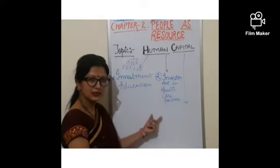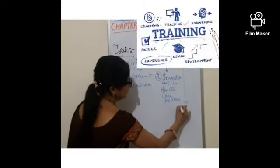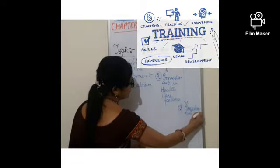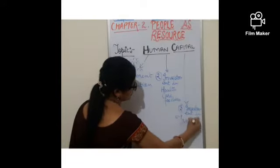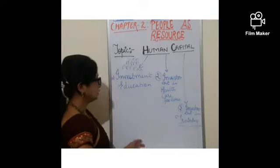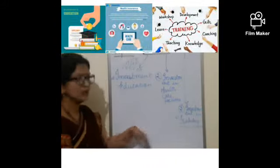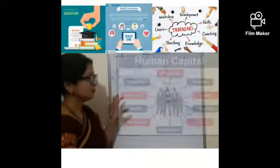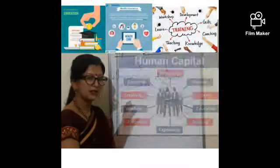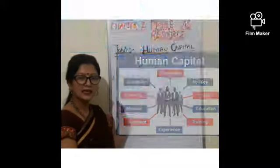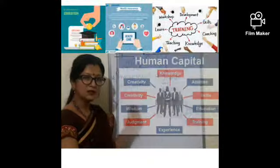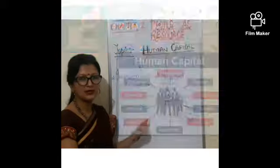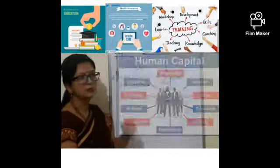The government has launched several schemes in this regard, which we will study further. The third input is investment in training. These are the three inputs through which we can convert people as resource into human capital. If investment is made in education, healthcare, and then skill-based training, we are preparing human capital. These are the three steps.